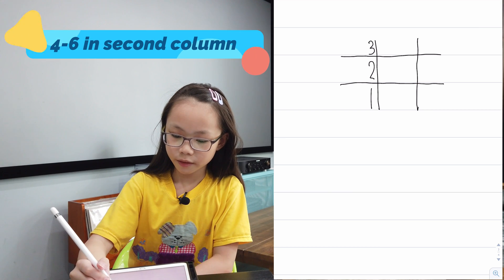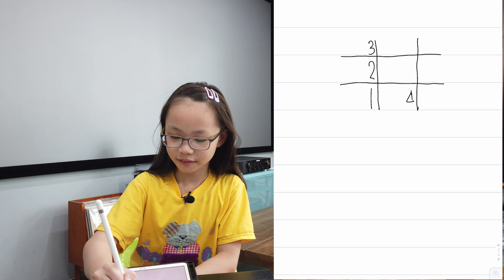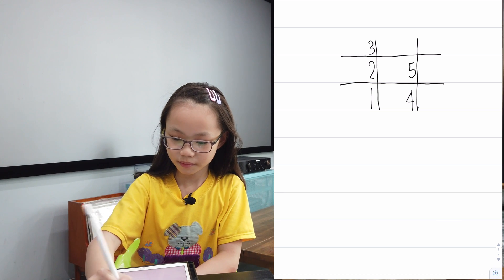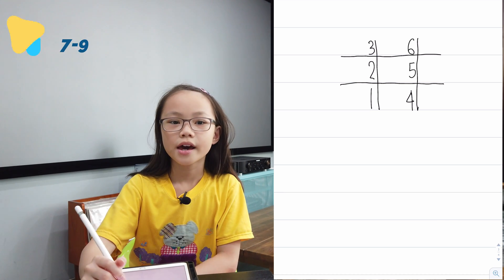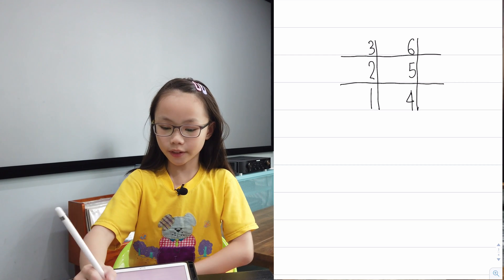In the second column, we're going to write the numbers 4, 5, and 6. And on the last column, we're going to write the numbers 7, 8, and 9.